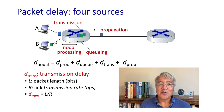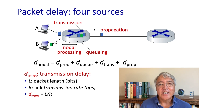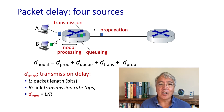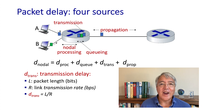Once a packet begins transmission, it's being sent into the link at transmission rate R, and it takes a certain amount of time for all of the bits in that packet to be pushed into the outgoing link. This is known as the transmission delay. The transmission delay is simply the number of bits in the packet L divided by the transmission rate R.